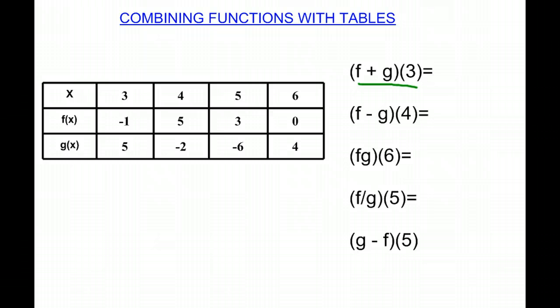So we look when x is 3, and we have f(3) plus g(3). And f(3) is negative 1, and g(3) is 5. So negative 1 plus 5 is 4.